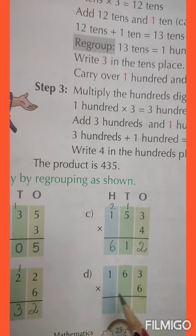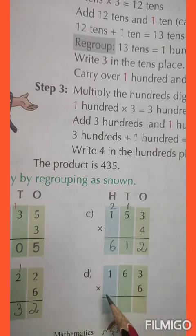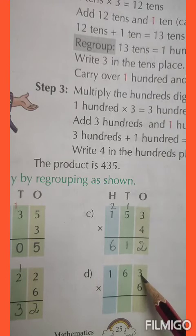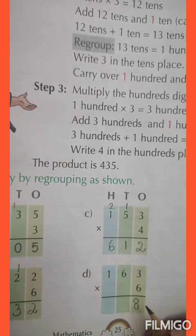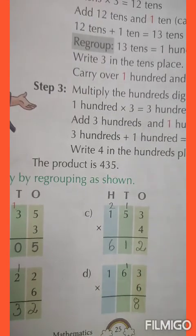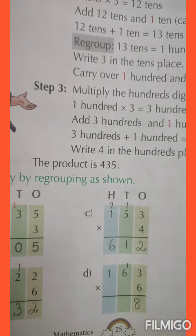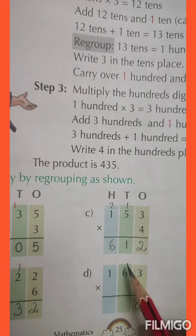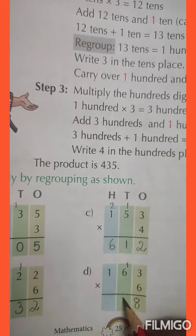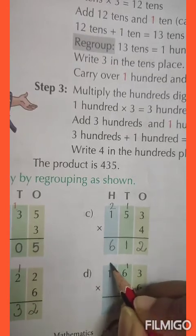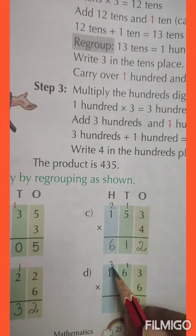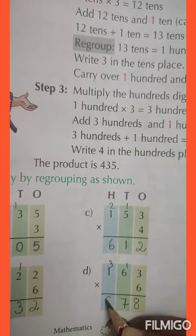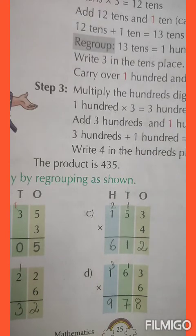Question number D: 163 into 6. 6 threes are 18, write 8 and 1 is carried over. 6 sixes are 36, 36 plus 1 is 37, so 7 will be written here and 3 is carried over. 6 ones are 6, 6 plus 3 is 9. And the answer is 978.